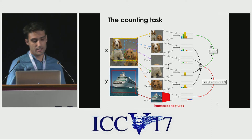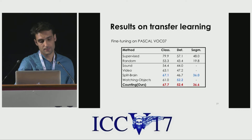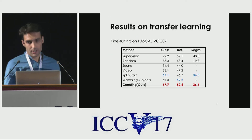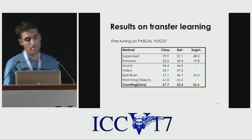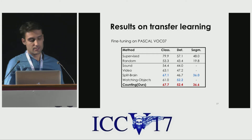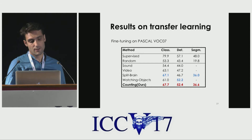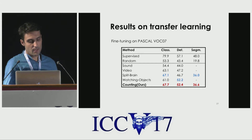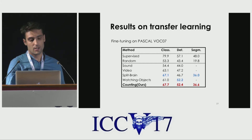In the end, we take the convolutional layer of one column as our learned representation. We train our model on ImageNet using no labels and transfer the learned representation to different benchmarks. Here I only mention fine-tuning on Pascal. As you can see, by the time of submission, our method achieved state-of-the-art on different tasks on Pascal.